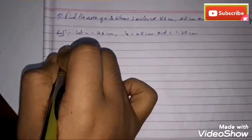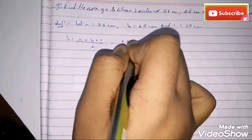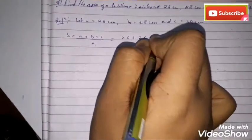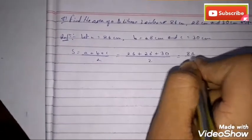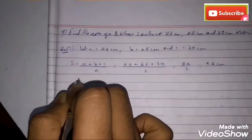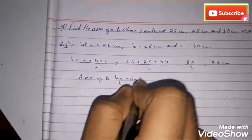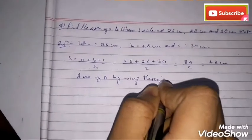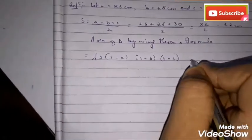For applying Heron's formula we need s. So s = (a + b + c) / 2 = (26 + 28 + 30) / 2 = 84 / 2 = 42 centimeters. Now we will find the area of the triangle using Heron's formula: Area = √(s × (s−a) × (s−b) × (s−c)) square units.